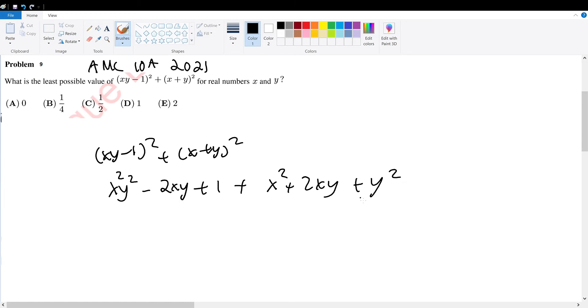We are not told what this is equal to, but hang on a sec. We do not need it. So we can combine these two like terms to get x squared plus x squared y squared plus y squared plus 1.